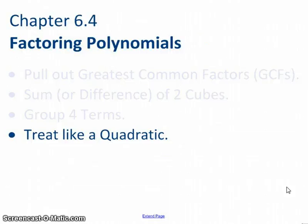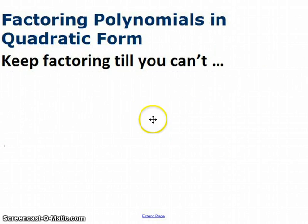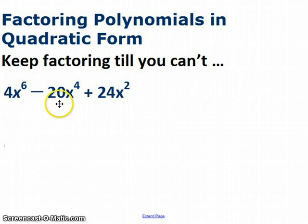All right, last scenario. If none of the other techniques work, see if you can treat the polynomial that you're given like a quadratic. In that case, you can use those rules for factoring quadratics that we mastered back in December. One of the key points I'm going to keep coming back to is keep factoring until you can't factor any further. Example on the left. This is the polynomial I'm given. Well, I can see some GCFs here. 4 and 20 and 24 have something in common, as do the variables. So I pull that out to the side, 4x². What I'm left with here now, inside the parens, is not a quadratic, because the degree is 4.